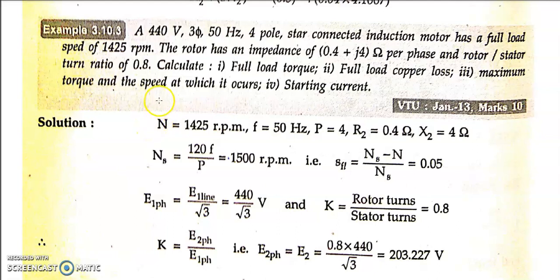We shall see another problem based on three-phase induction motor. A 440V, three-phase, 50 Hz, four-pole star-connected induction motor has a full load speed of 1425 rpm. The rotor has an impedance of 0.4 + j4 ohm per phase, so r2 = 0.4 ohm and x2 = 4 ohm. The rotor-to-stator turns ratio is 0.8, so n2/n1 = e2/e1 = 0.8. Calculate: (1) full load torque, (2) full load copper loss, (3) maximum torque and speed at which it occurs, (4) starting current.